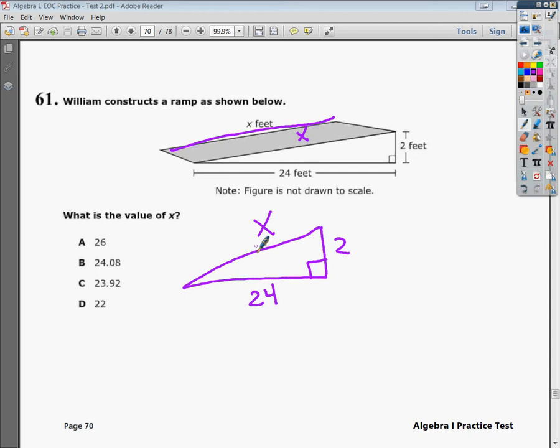I mean, logically, you could figure out that since it's a right triangle, it has to be longer than the longer side. So the fact that it could be 22 doesn't make any sense, because this side here is 24. And the 23.92 doesn't make any sense, because the hypotenuse has to be longer. So you can eliminate those two almost immediately.